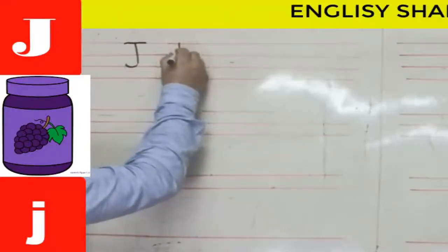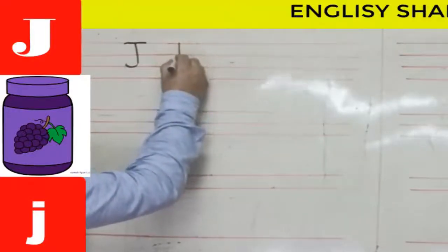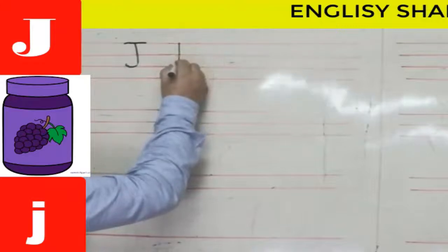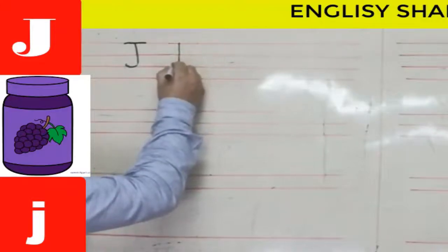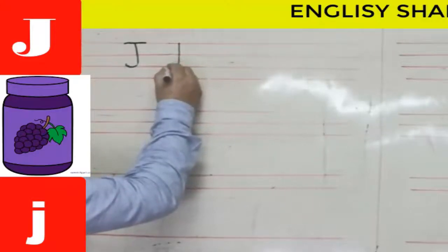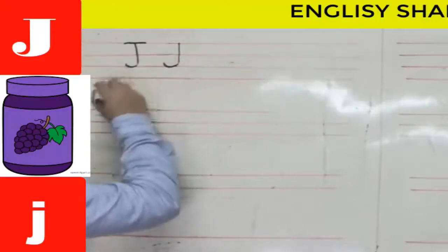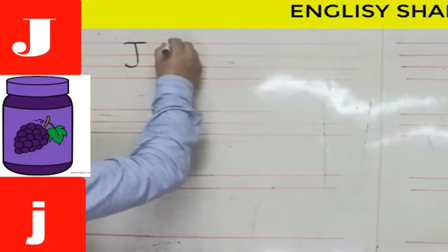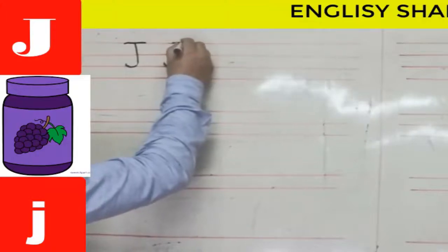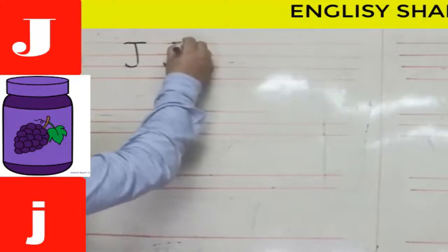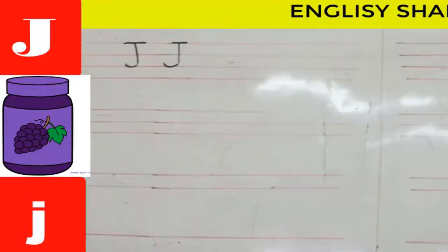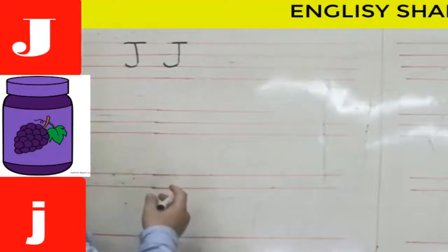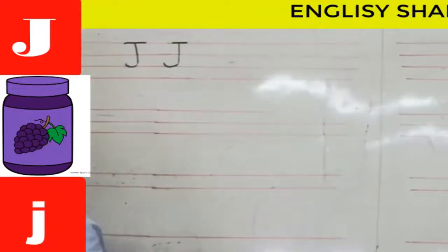Again for uppercase J on four lines: I start at the top at the first line, go down to the third line, curve it at the bottom, then make a sleeping line at the top across that line. That's a capital J.